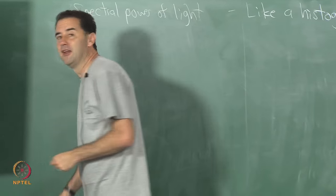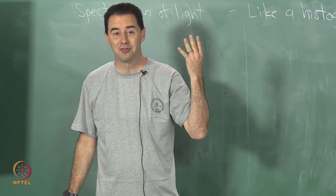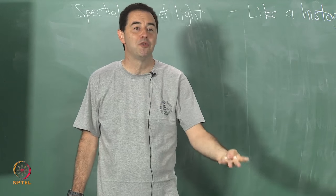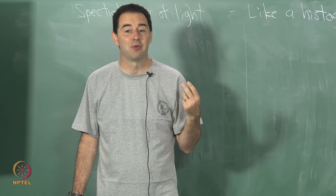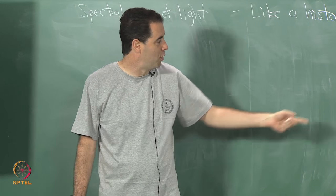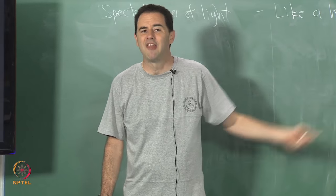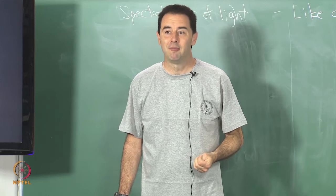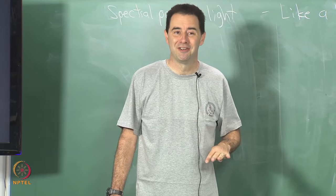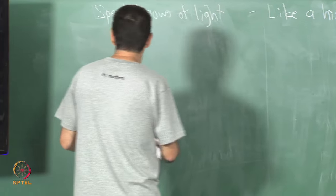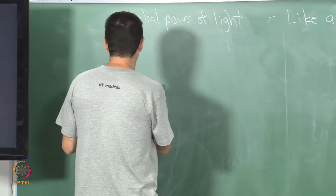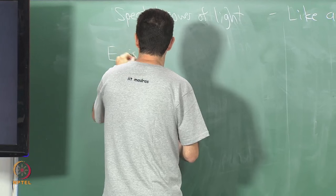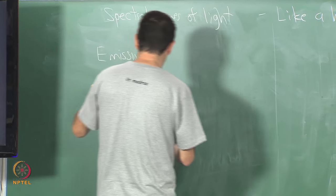Two things affect the spectral distribution reaching our eyes. The first is the light emitted from sources, and the second is the spectral reflectance of the various materials in the environment — how they reflect light — which affects our perception of color. This board appears green and white; that depends on the properties of the board and the properties of the lights shining on it.